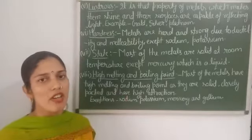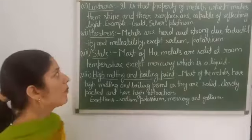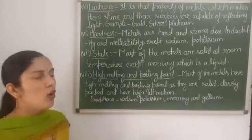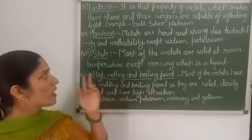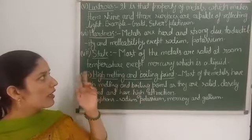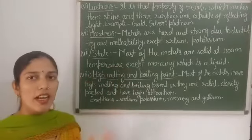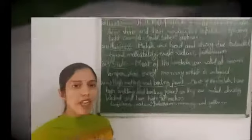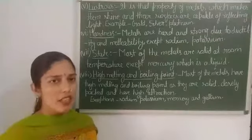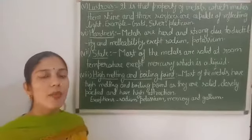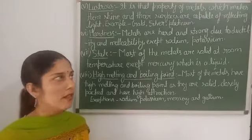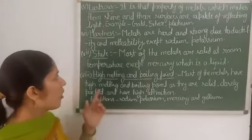The next property is hardness. All metals are hard and strong because of their ductility and malleability properties, except sodium and potassium — these two metals are very soft and can be cut with a knife easily. Because of the hardness property, bridges are made with metals like iron.